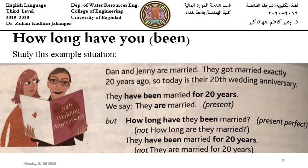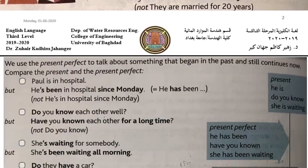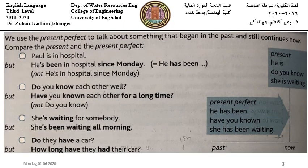We use the present perfect to talk about something that began in the past and still continues now. Compare the present simple and the present perfect in these examples.